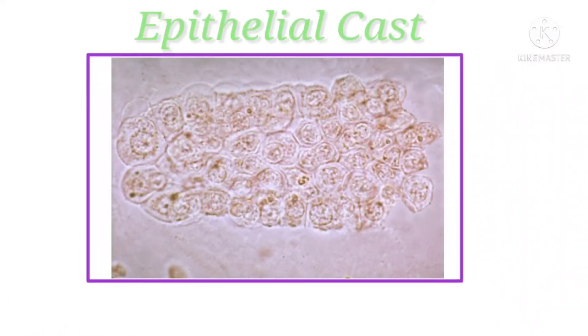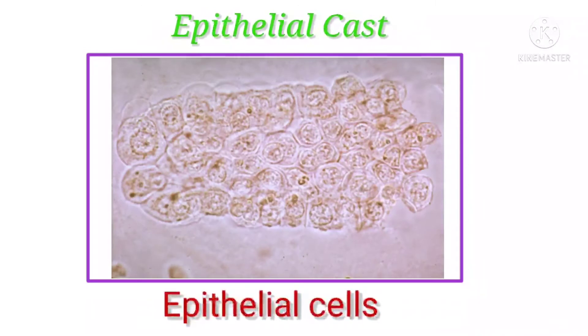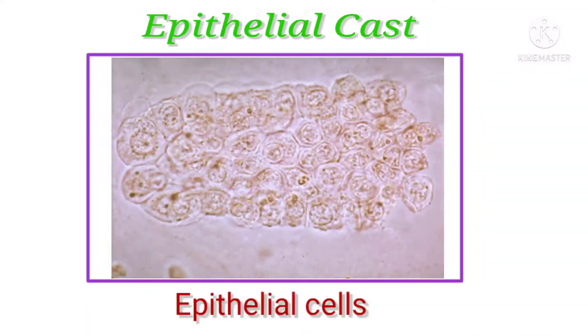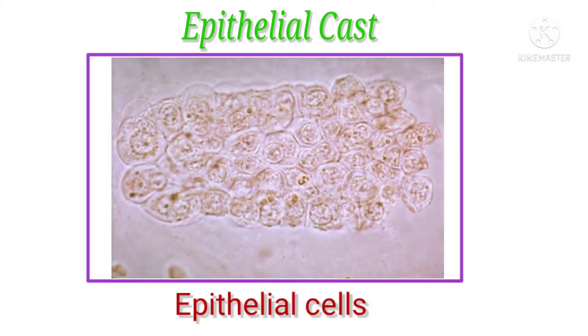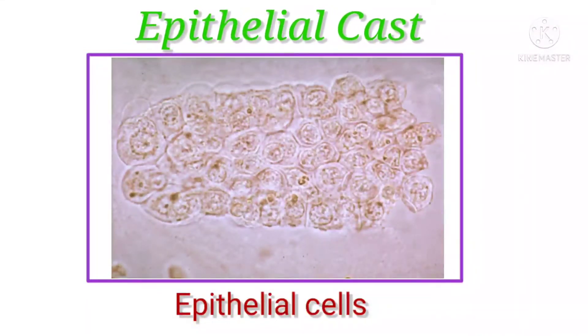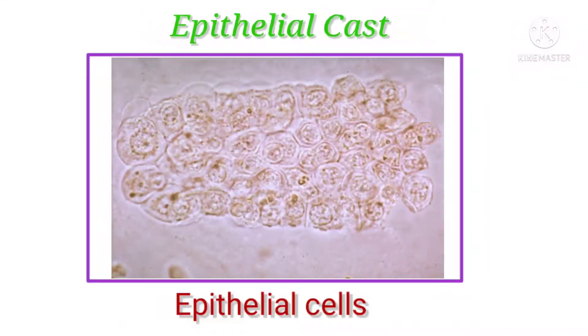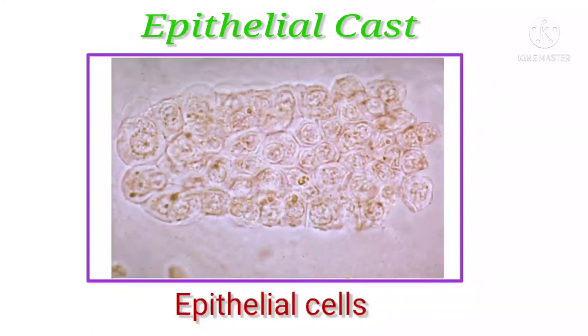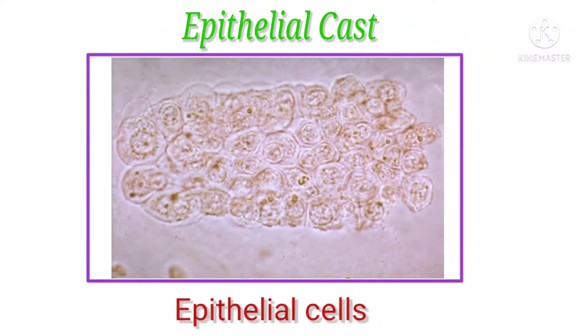More significant than observation of other types of epithelial cells, the cells can be round, oval, columnar, or cuboidal.